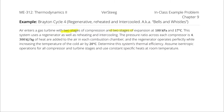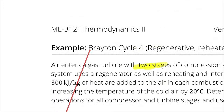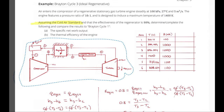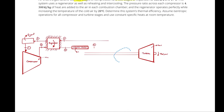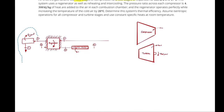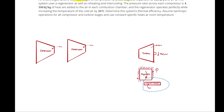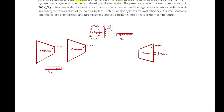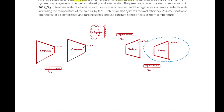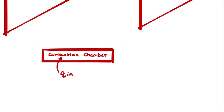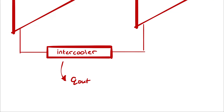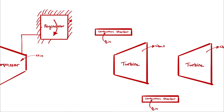The system diagram involves a compressor, an intercooler, a compressor, a regenerator, a combustion chamber, a turbine, another combustion chamber operating as a reheating stage, and then another turbine. We will be closing the cycle through a Q-out box.